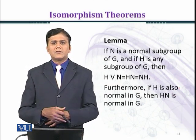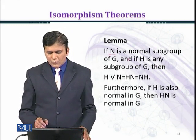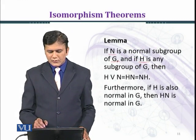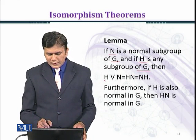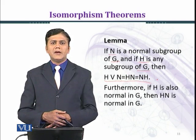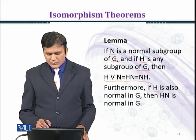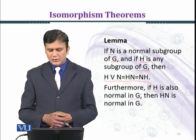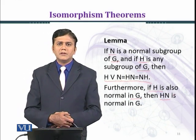Let's state the lemma. If N is a normal subgroup of G and H is any subgroup of G, then H∨N = HN = NH. Furthermore, if H is also a normal subgroup of G, then HN is normal in G.